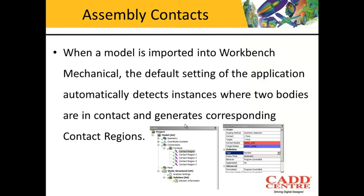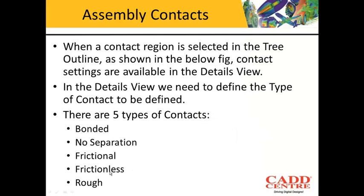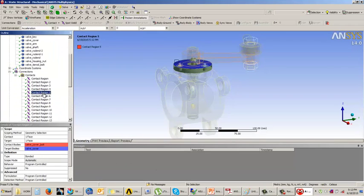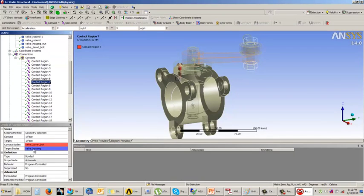Now let us understand what are the types of contacts. We basically have five major types: bonded contact, no separation, frictional, frictionless, and rough. These contact types are visible in the details window. If you select any contact region, you will see the part names plus the type. So these are the five types of contacts.